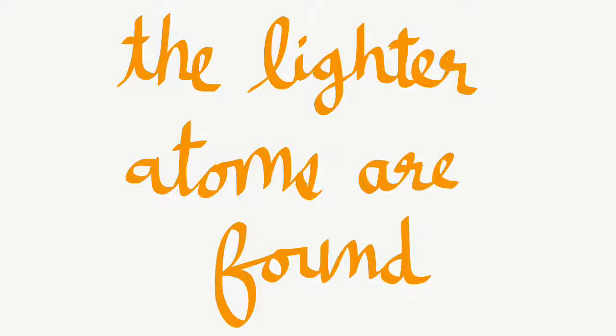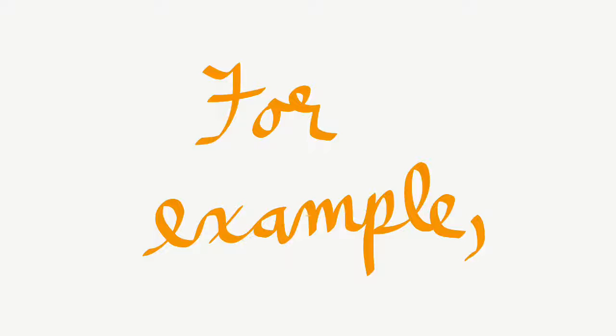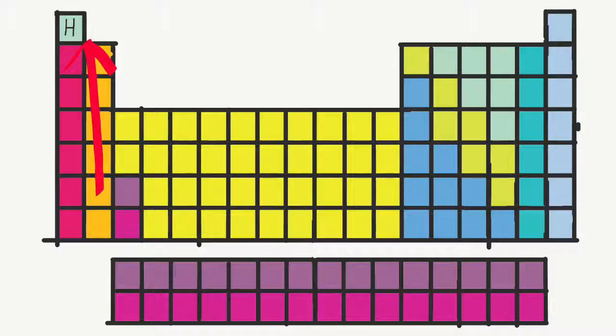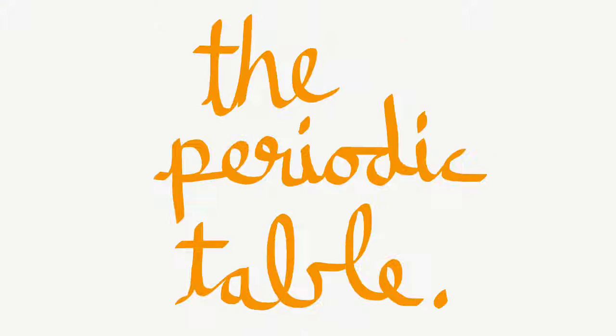Likewise, the lighter atoms are found near the top and left of the periodic table. For example, hydrogen is at the top and left of the periodic table and it's the lightest element.